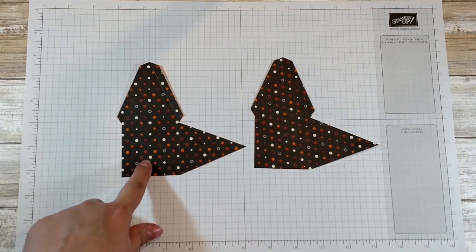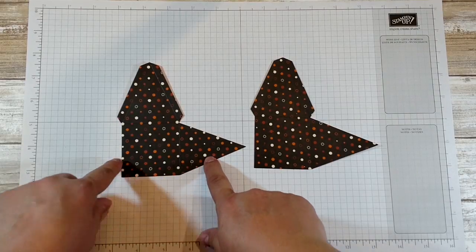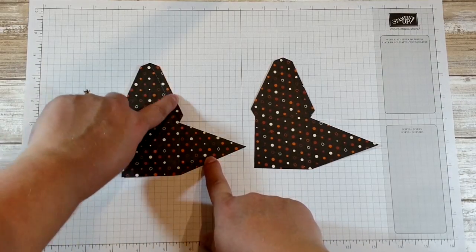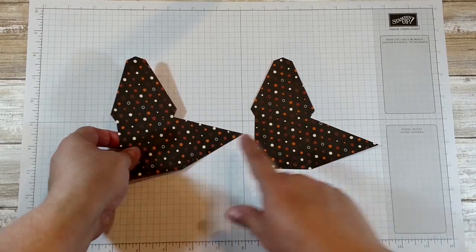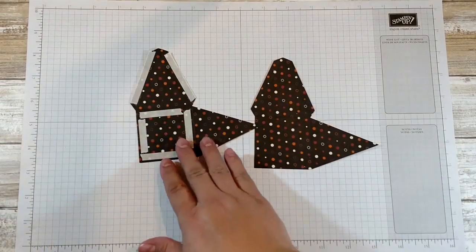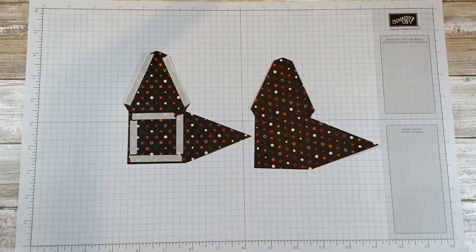Now on this left one you need to put double sided tape along these two tabs and along the perimeter of this square section in the middle. So this is what it will look like once you have all the tape on it.